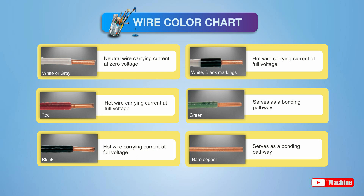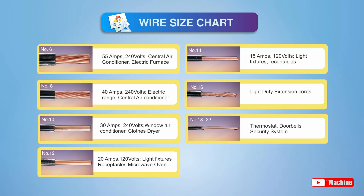Individual wires are color coded to identify their function. In some circuit installations, the white wire serves as a hot wire that carries voltage. If so, this white wire may be labeled with black tape or paint to identify it as a hot wire. Wire sizes are categorized by the American Wire Gauge system. The larger the wire size, the smaller the AWG number.